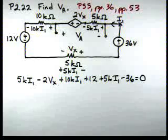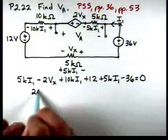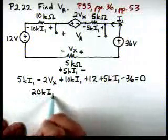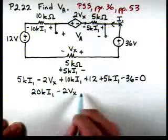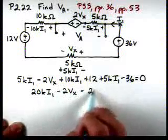So now, let's collect some terms. So in terms of the current, we have 20K times I1 minus 2VX is equal to 24.